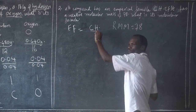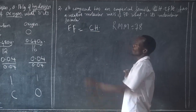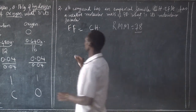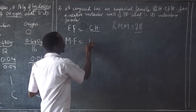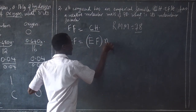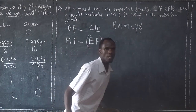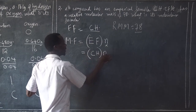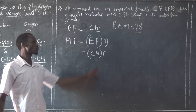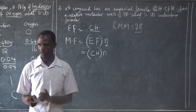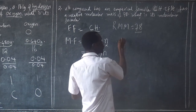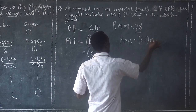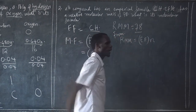We don't need to determine the empirical formula because we have already been given it from the question. But now we have the relative molecular mass. The molecular formula is equal to the empirical formula times N. So we don't have N here yet, but we have the empirical formula: it will be equal to CH times N. Let us find the value of N so we may substitute it.